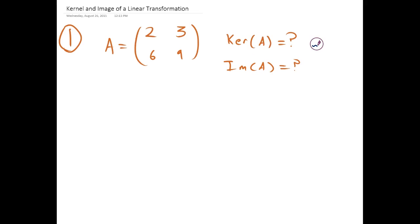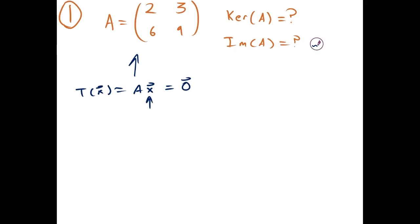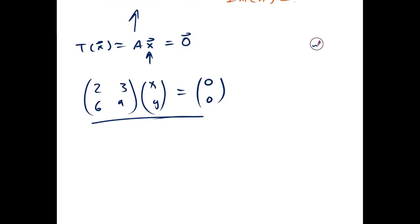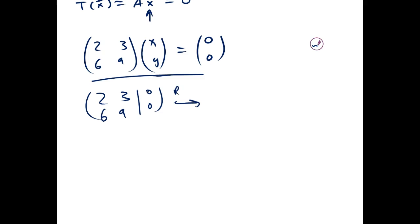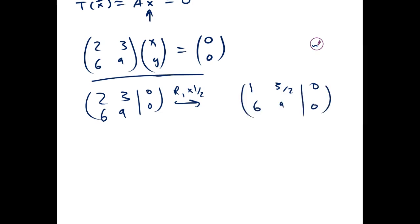The kernel is the set of all vectors that the linear transformation defined by this matrix maps to 0. So the kernel is any vector x that maps to 0. The way we find the kernel is we look for all x and y for which this holds, and we solve this by row reduction. We divide R1 by 2, and subtract from R2, 6 times R1.